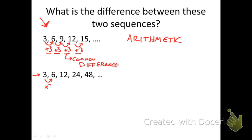I know that 3 times 2 gives me 6, 6 times 2 gives me 12, 12 times 2 gives me 24, and 24 times 2 gives me 48. So this multiplicative difference, that is what we call our common ratio.